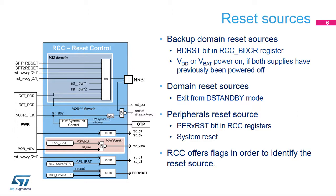The high-speed internal oscillator (HSI) is a 64 MHz RC oscillator which provides fast wake-up times. The HSI is trimmed during production testing and can also be user-trimmed. A dedicated divider can generate a 32, 16, or 8 MHz clock. The HSI can be selected as a clock at wake-up from system stop, and as the backup clock if an HSE failure is detected by the clock security system. The HSI can remain powered when the system goes to stop mode in order to speed up the wake-up time. Certain peripherals, such as the I2Cs and USART LPUART, can request the activation of the HSI in system stop mode in order to generate wake-up events.